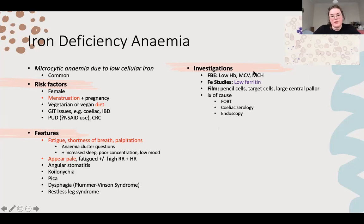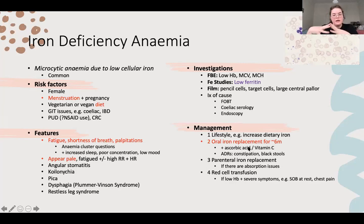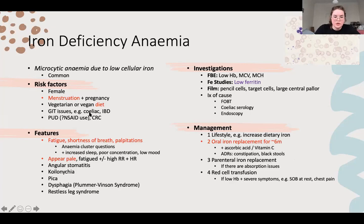The way you manage this is essentially giving them the iron back. Try dietary first - you can tell them to drink orange juice as well. Otherwise, put them on oral replacement for six months, giving it with vitamin C to help with uptake. Tell them about constipation and black stool. If you think there might be colorectal cancer, you need to investigate this first. If they have absorption issues, oral supplements won't work - you need to give it IV. If it's really bad or they need red blood cells urgently, give a transfusion.